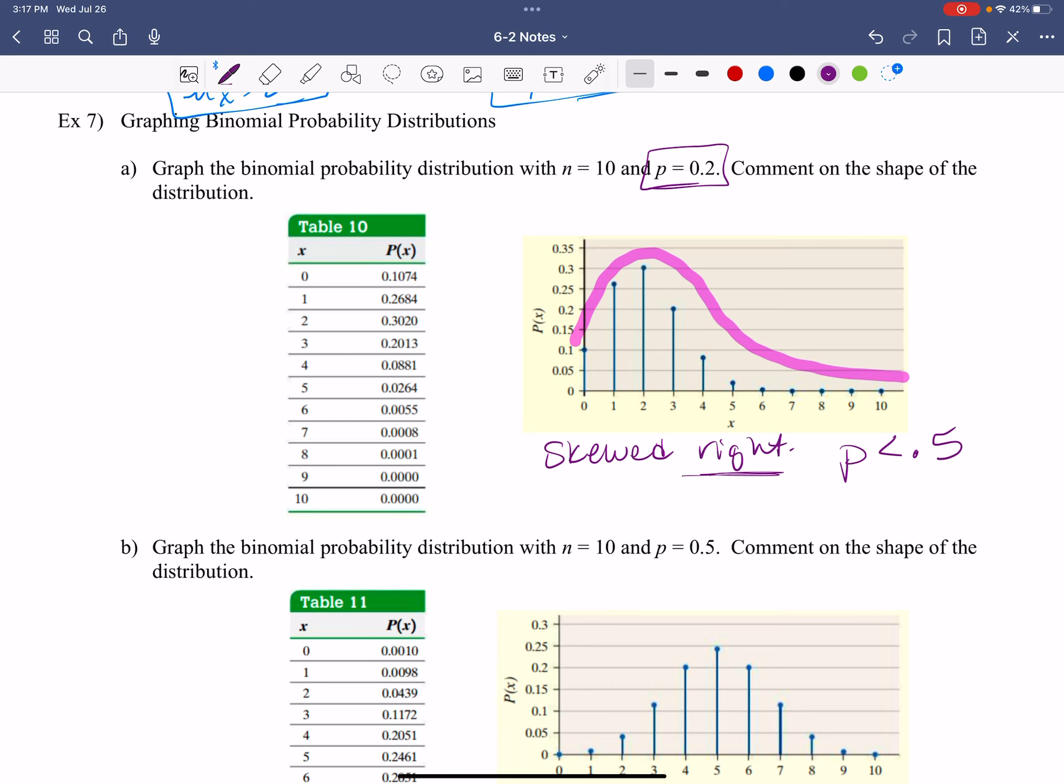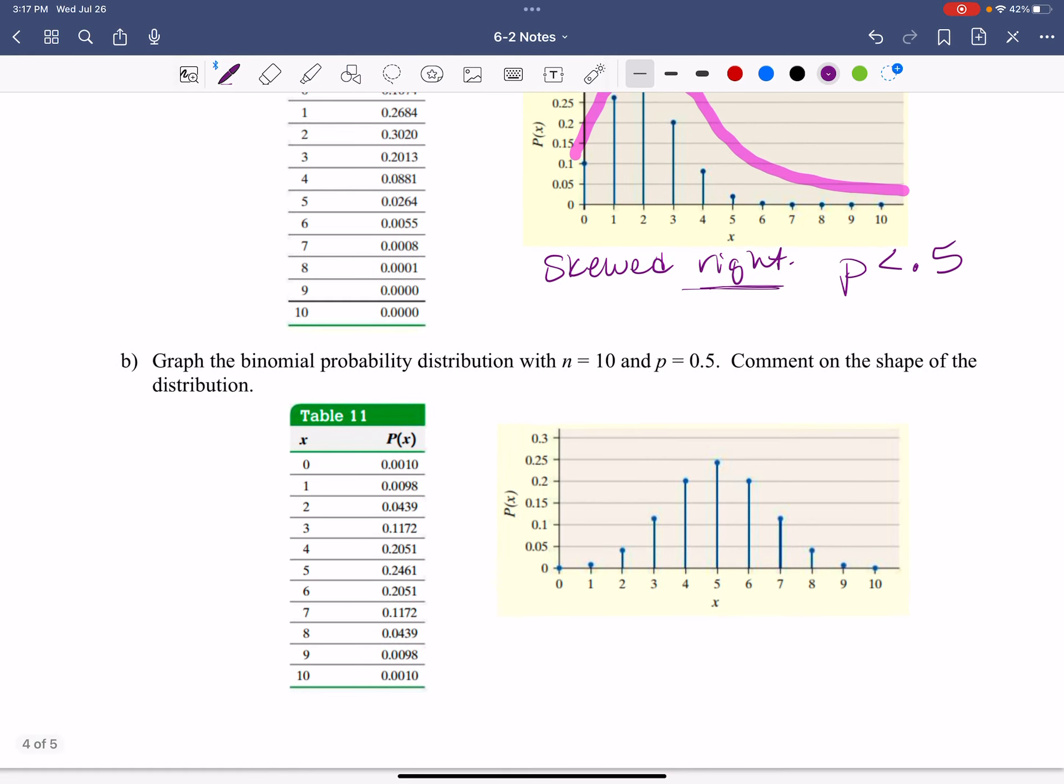Because that would be halfway on my data. That is also another indicator that this is skewed right. Okay. So what do you think about this next one? So still n equals 10. I still have 10 pieces of data here that we're looking at. And my probability is at 0.5. What do you notice about this graph?